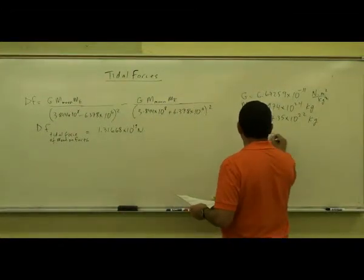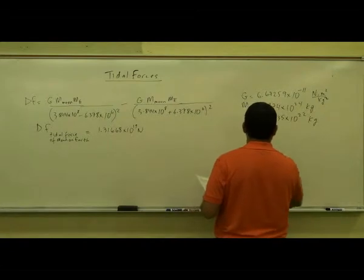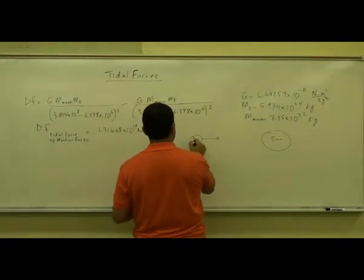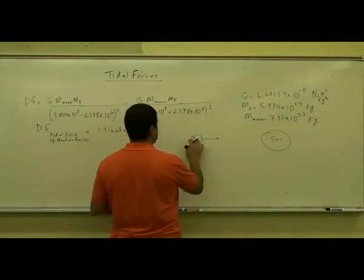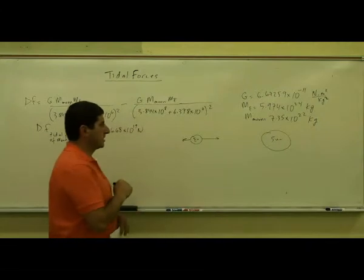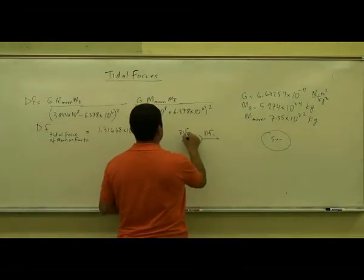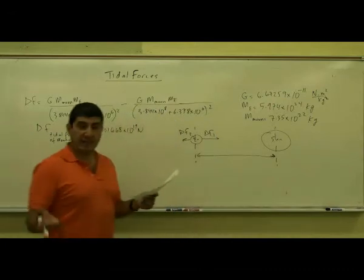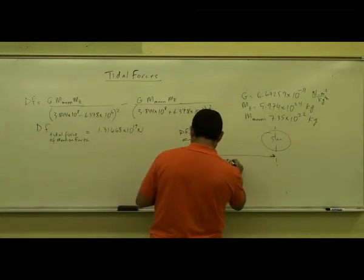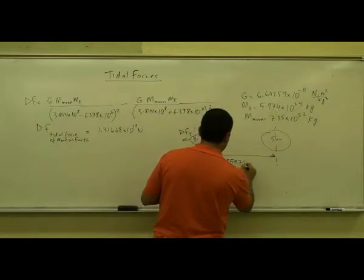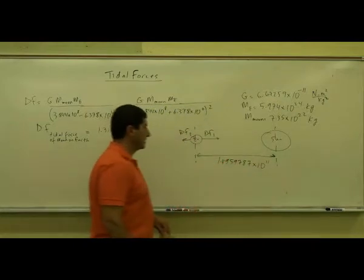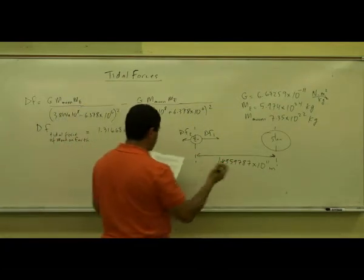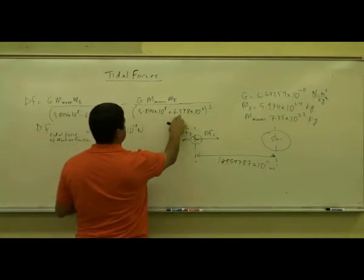Let's do the same thing with the Sun — imagine this is the Sun, of course it's much bigger than the Earth. The Sun attracts the near side of the Earth with a bigger force and the other side with a smaller force, so we do that subtraction. The distance from the center of the Earth to the center of the Sun is 1 AU, which is 1.4959787 × 10^11 meters, and the radius of the Earth is 6.378 × 10^6 meters.